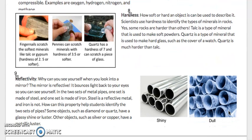Hardness. How soft or hard an object can be used to describe it. Scientists use hardness to identify the types of minerals in rocks. Some rocks are harder than others. Talc is a type of mineral that is used to make soft powders. Quartz is a type of mineral that is used to make hard glass, such as the cover of a watch. Quartz is much harder than talc. You can see here, fingernails can scratch the softest minerals, like talc or gypsum, that have a hardness of 2.5 or softer. Pennies can scratch minerals with a hardness of 3.5 or softer. And quartz has a hardness of 7 and can scratch a piece of glass.